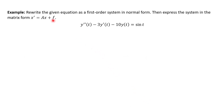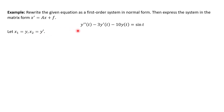Let's try our first example: we're going to rewrite a given equation as a first-order system in normal form, then express the system in matrix form x prime equals ax plus f. We're given a second-order differential equation and want to write it as a system of first-order differential equations. We pick unknowns: x1 is y and x2 is y prime. For a second-order equation we only need to go up to the first derivative — for a tenth-order we'd define variables up to the ninth derivative.